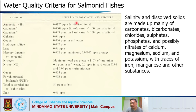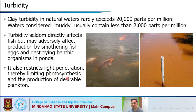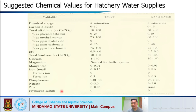There are different water quality criteria for salmonid fish showing upper concentration limits for various chemicals. Regarding turbidity, clay turbidity in natural waters rarely exceeds 20,000 ppm; water considered muddy usually contains less than 2,000 ppm. Turbidity seldom directly kills fish but may adversely affect production by smothering fish eggs, destroying benthic organisms, and restricting light penetration, thereby limiting photosynthesis and production of desirable plankton that serve as feed for aquatic organisms.